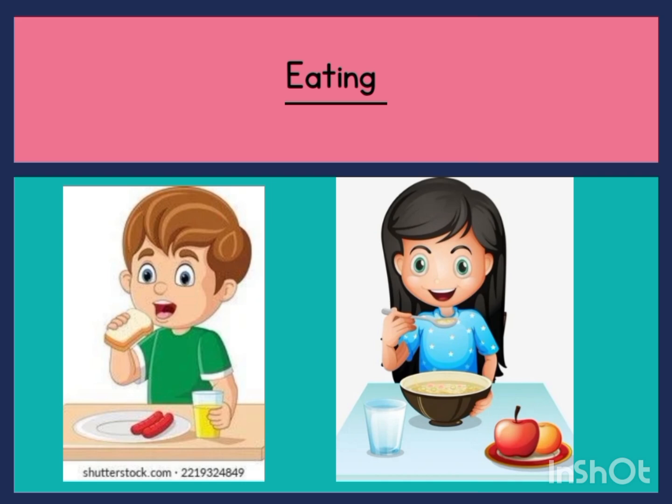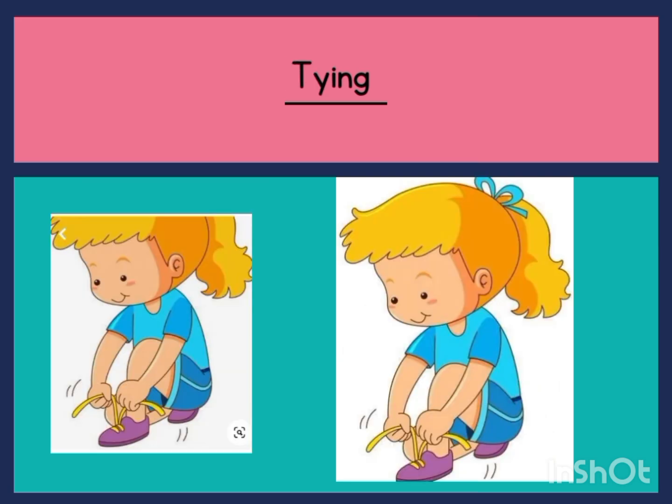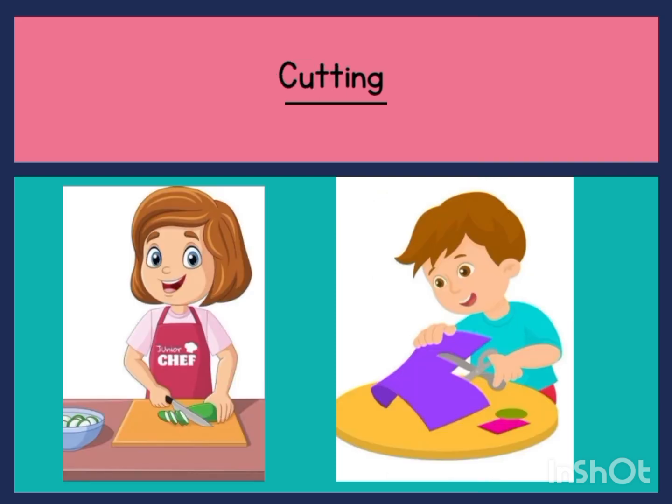Drinking — they are drinking, they are performing an action. Drinking is an action word. Tying — the boy is tying his lace, so tying is an action word. He's performing an action and the action is tying his lace.